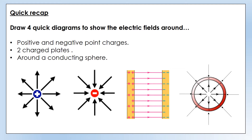Now you've had a chance to draw them, here are the four things we should have. With a positive point charge we should see lines going off radially outward. On the negative charge you should see the lines coming radially inward. Between charged plates you should see the lines going from positive to negative, and they should be equally spaced. Don't worry if yours are a bit further apart or closer than mine, as long as they're equally spaced going from positive to negative.